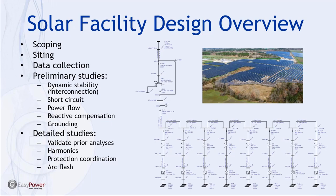We'll look at the types of studies performed during different stages of facility design. In a preliminary sense, we may look at things such as dynamic stability, interconnection studies, short circuit, power flow, reactive compensation, and grounding. Toward the detailed design phase, we typically look to validate prior analyses, examine harmonic spectra, perform protection coordination studies, and finally do arc flash analysis.